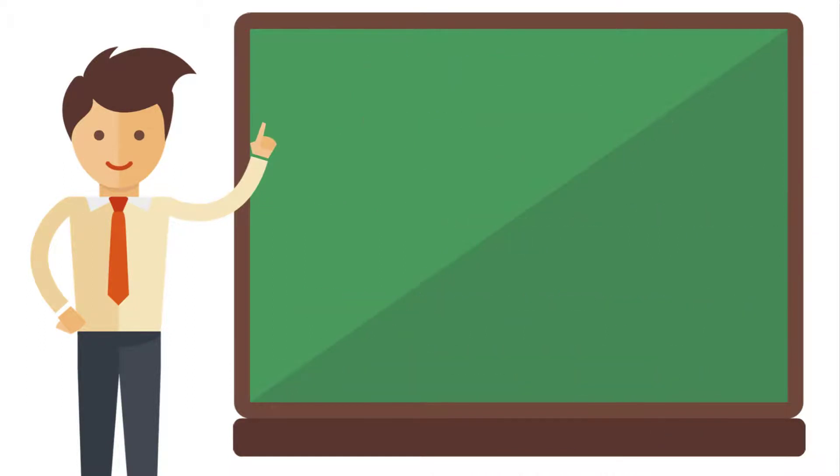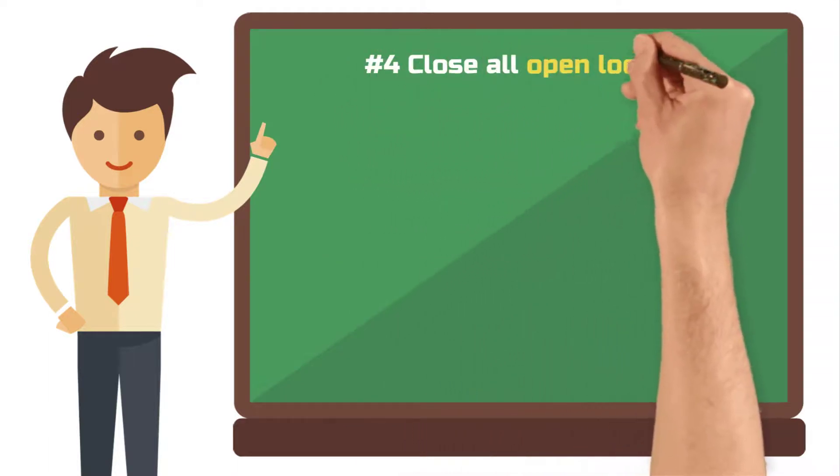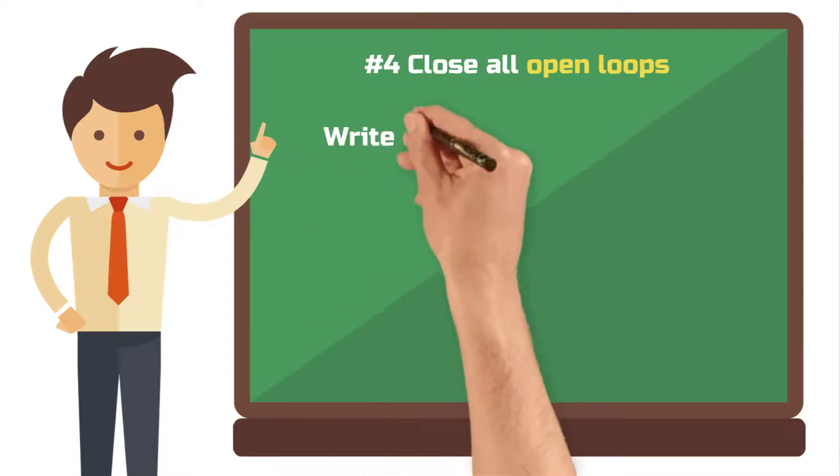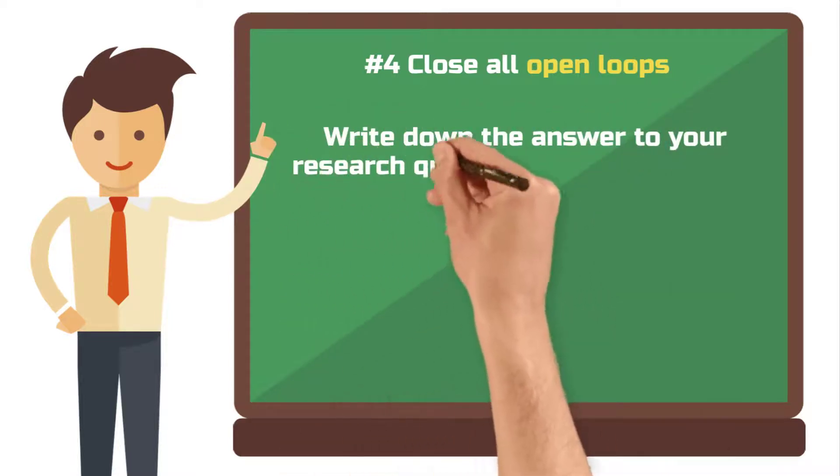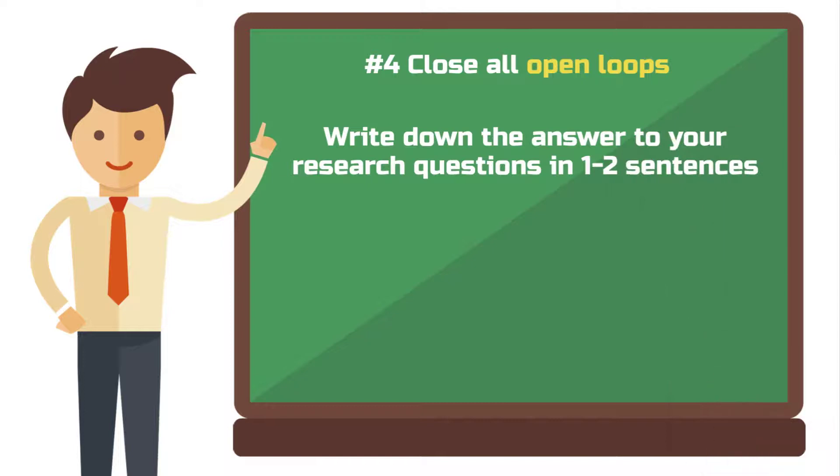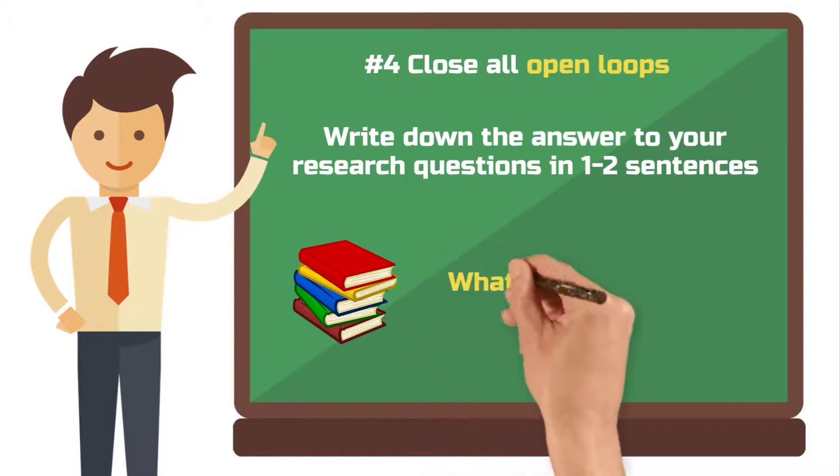Step 4. Close all open loops. One of the most important steps is to concisely repeat the answer to the research question you posed at the beginning. In doing so, you must abstract your results to such an extent that they point purposefully to the problem of your work in just a few sentences. Explain your results in an understandable way and explain how they build on existing literature.